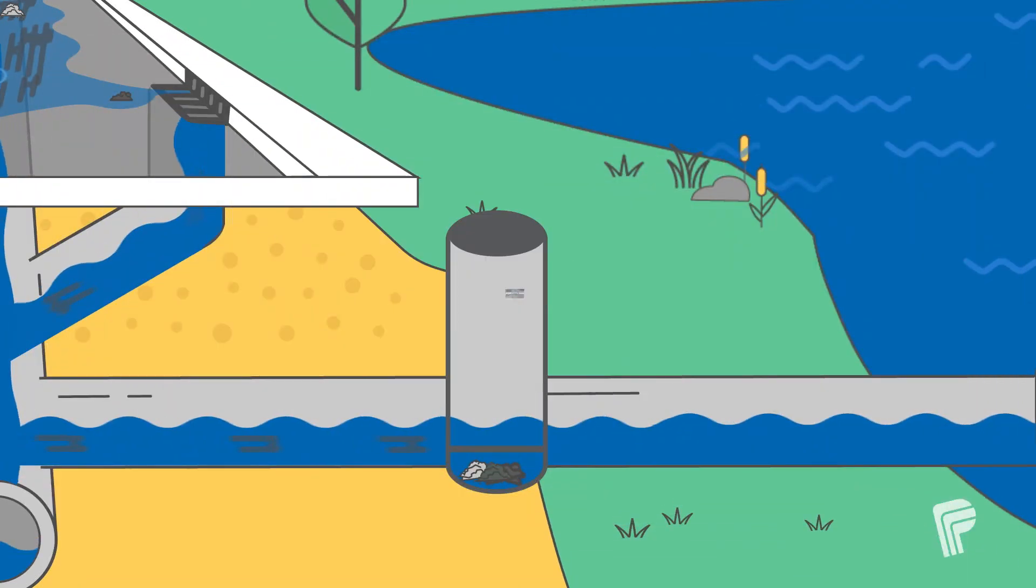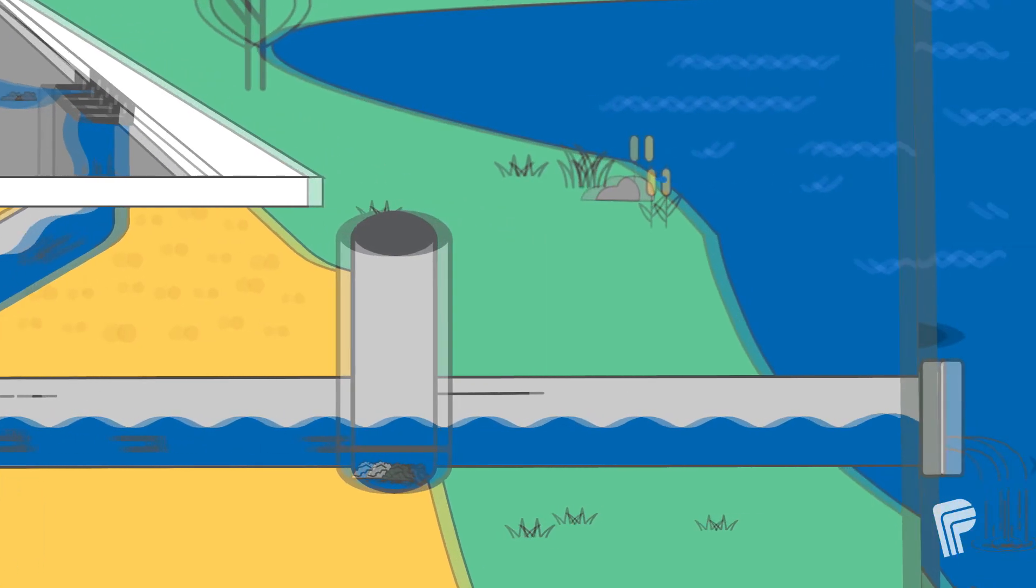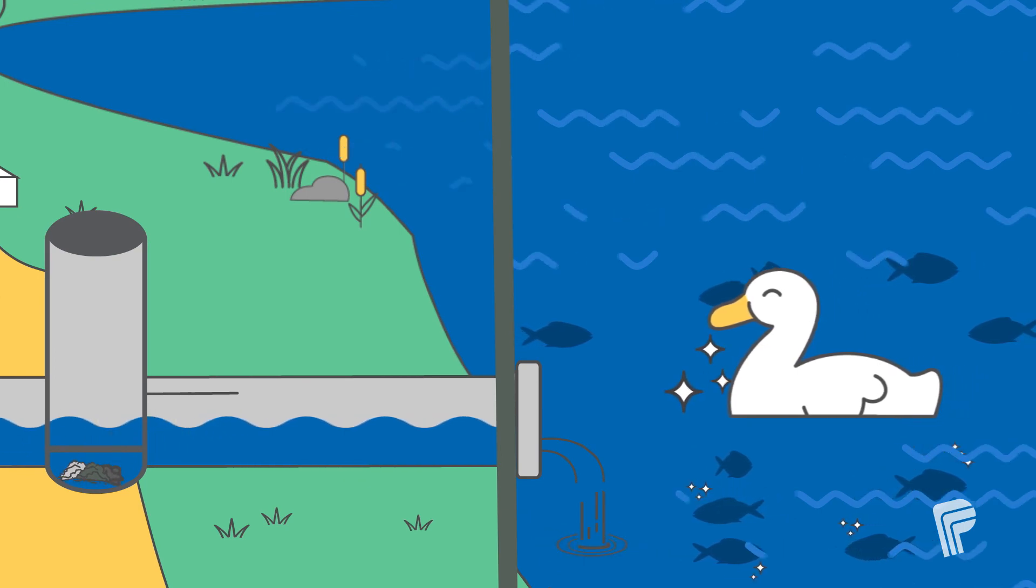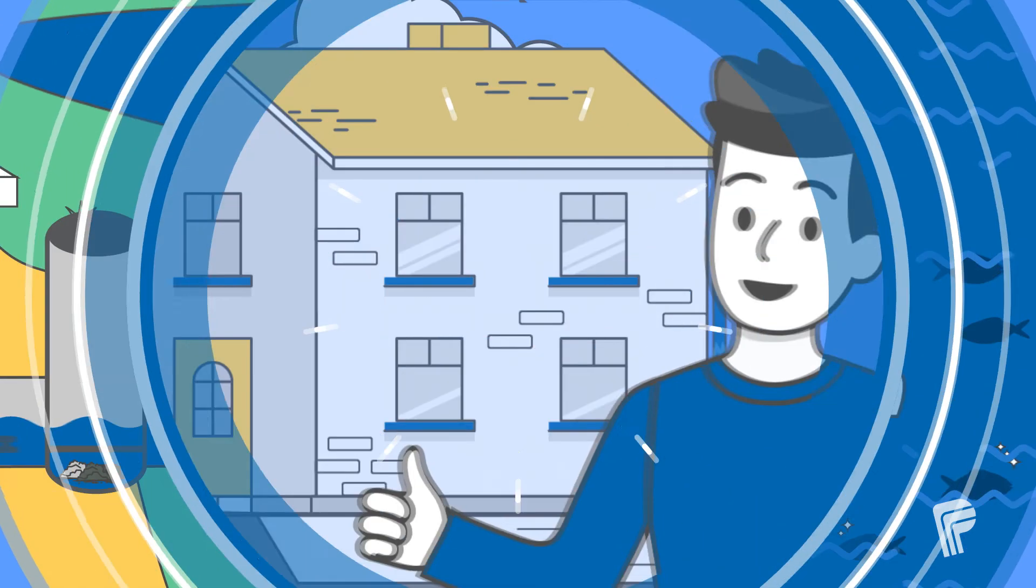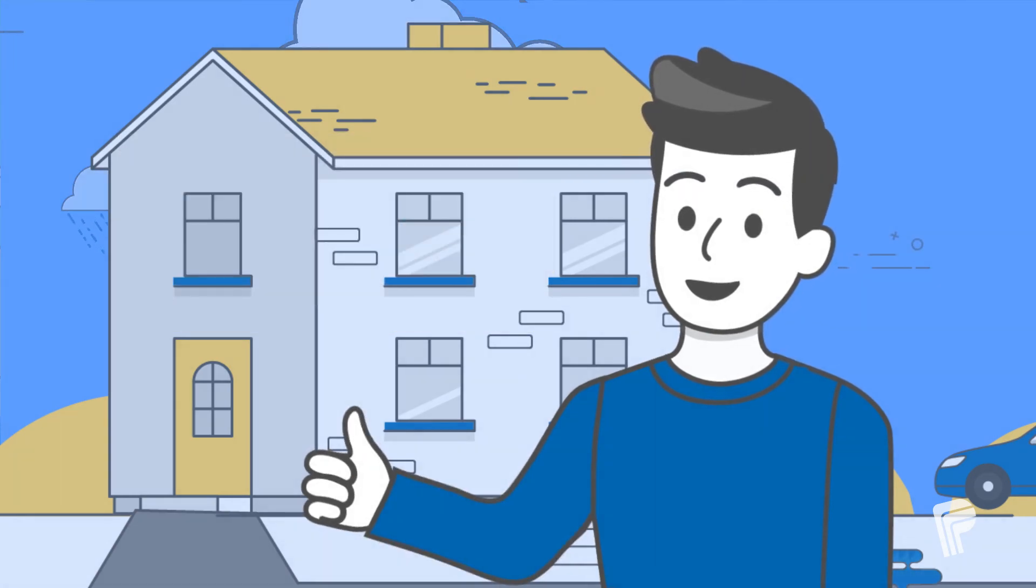This design approach is used to develop infrastructure that mimics the natural water cycle. The region will continue working with area municipalities, as well as conservation authorities, to ensure that both the quantity and quality of stormwater maintenance is properly managed.